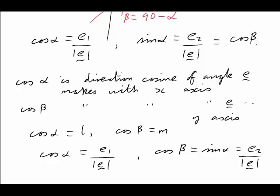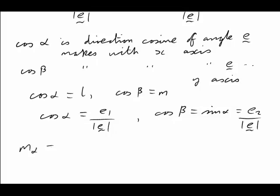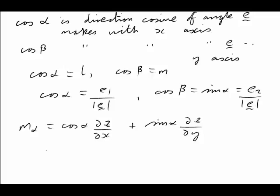So far, so good. Now let's go down to our directional derivative again. m_α, remember, was cos α times dz/dx plus sin α dz/dy. But sin α is the same as cos β and both of those cosines could be written in terms of e. First of all, e1 over the length of e for the cos α dz/dx. And then the sin α, which was the same as cos β, and that could be written as e2 over the length of e and now dz/dy.